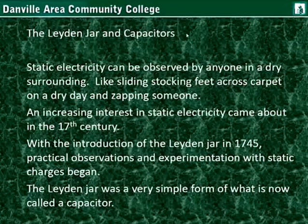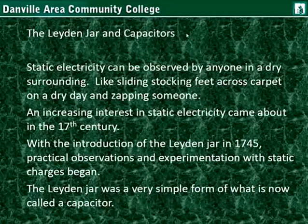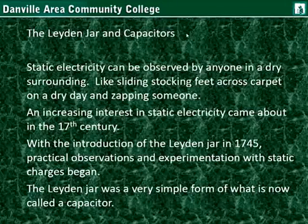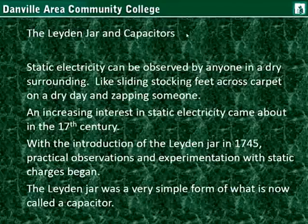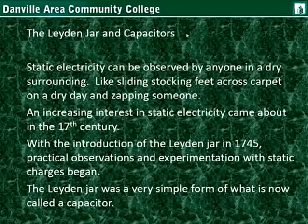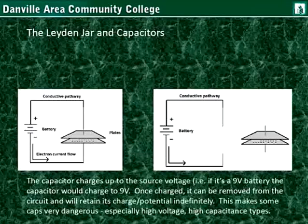Static electricity can be observed by anyone in a dry surrounding, like sliding your stocking feet across carpet on a dry day and zapping someone. An increasing interest in static electricity came about in the 17th century. In the following century, with the introduction of the Leiden jar in 1745, practical observations and experimentation with static charges began. The Leiden jar was a very simple form of what is now a capacitor. The capacitor charges up to the source voltage.